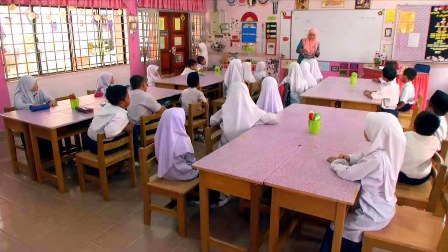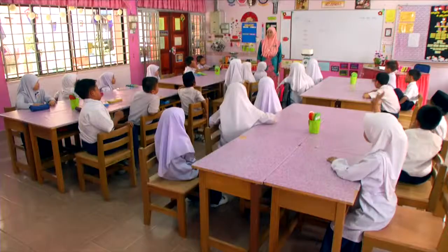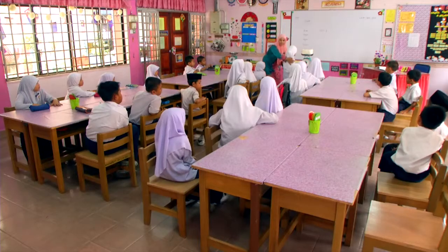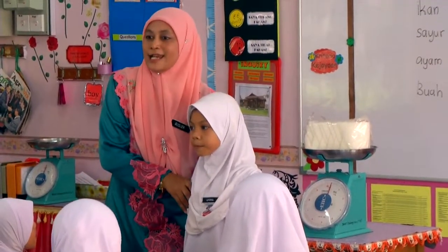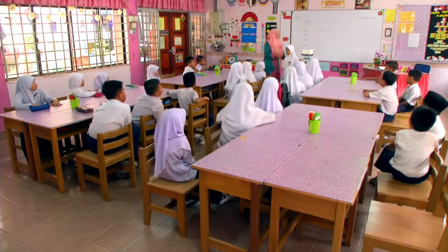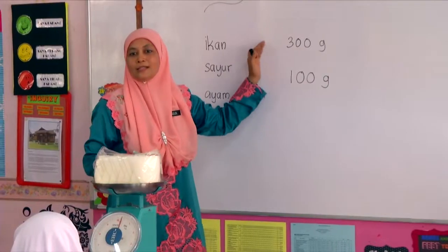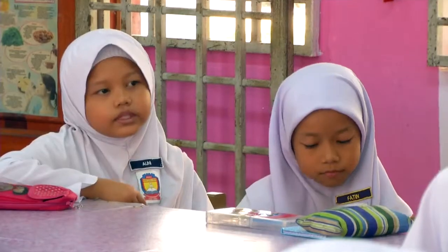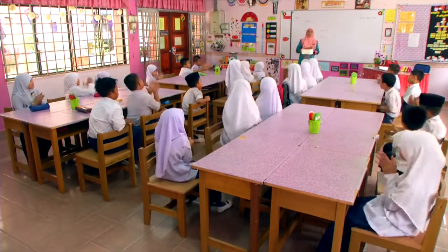Sekarang cikgu akan letakkan pula span ni. Siapa nak cuba? So Ziliana, silakan. Pusing belakang, beritahu kawan-kawan — nombor apa? 1. 1 ialah 100 gram. Jadi antara 300 gram dan 100 gram, yang mana lebih berat? 300 gram. Apa tadi 300 gram? Batu. Jadi semua betul kan? Alhamdulillah, beri tepukan yang gemuruh!